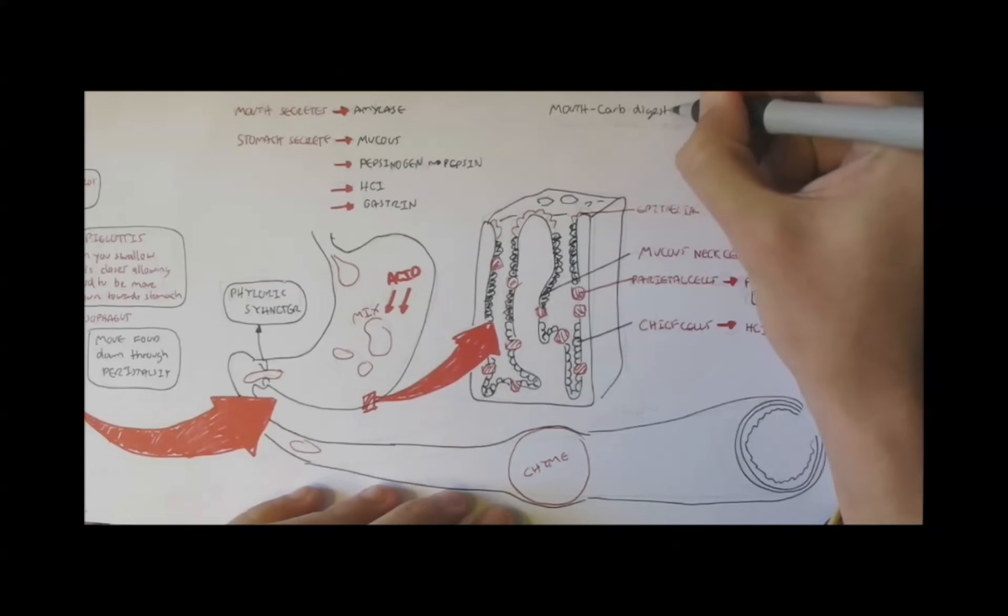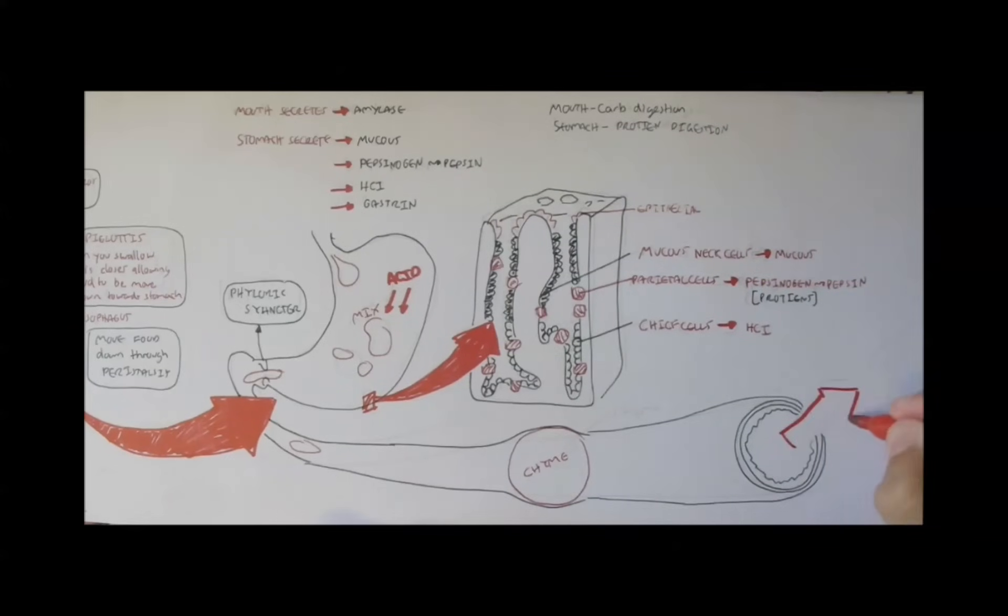And on top, we have some epithelial. And there are, of course, other types of cells here, but we won't discuss them. But if we look back at the enzymes we've learned, we have mouth for carb digestion and stomach for protein digestion so far. So, what happens in the small intestines?